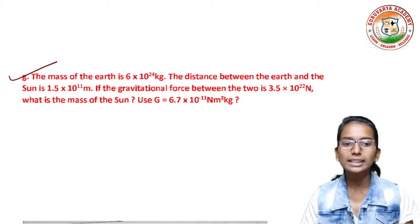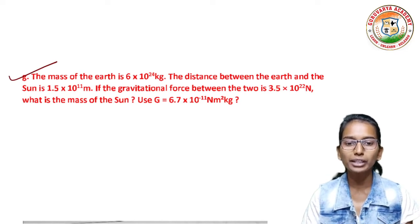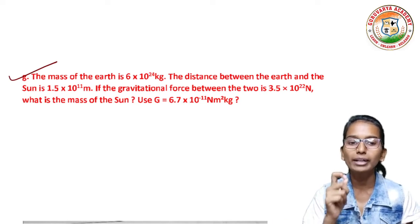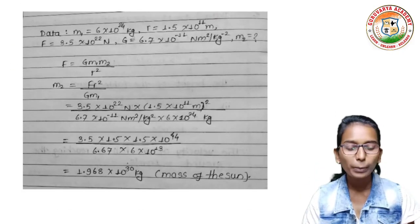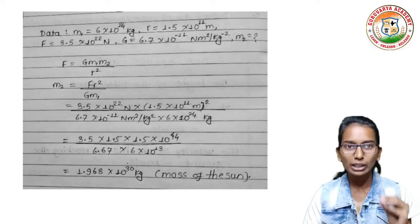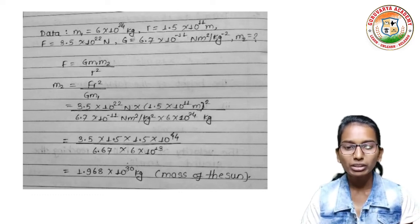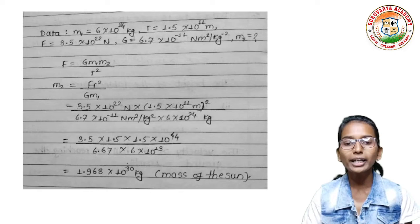Next problem: the mass of the earth is 6×10²⁴ kg, the distance between the earth and the sun is 1.5×10¹⁰ m, and the gravitational force between them is 3.5×10²² Newton — what is the mass of the sun? Using G = 6.7×10⁻¹¹ N·m²/kg², the mass of the sun is 1.968×10³⁰ kg.